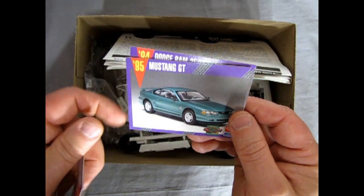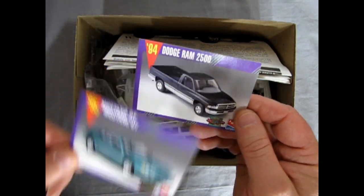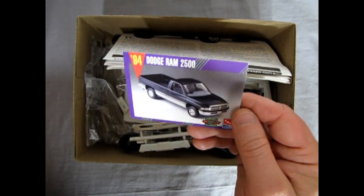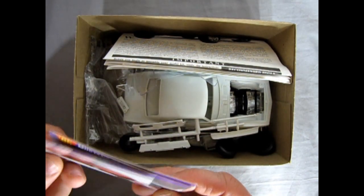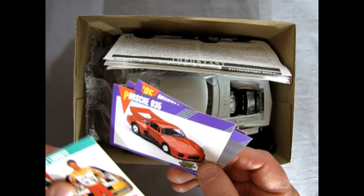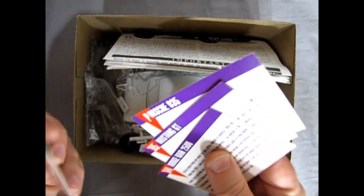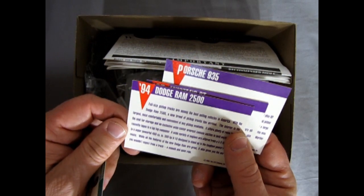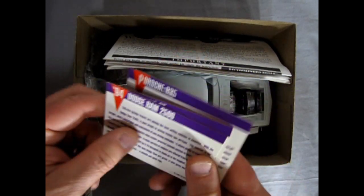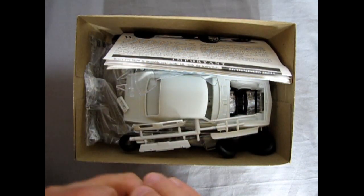And then we get these interesting trading cards. The AMT Porsche, the 95 Mustang, and the 94 Dodge Ram, and these were all new kits under AMT at the time for the 50th anniversary. And on the back they actually give you stats about the real cars. It's kind of interesting thing. I don't know.